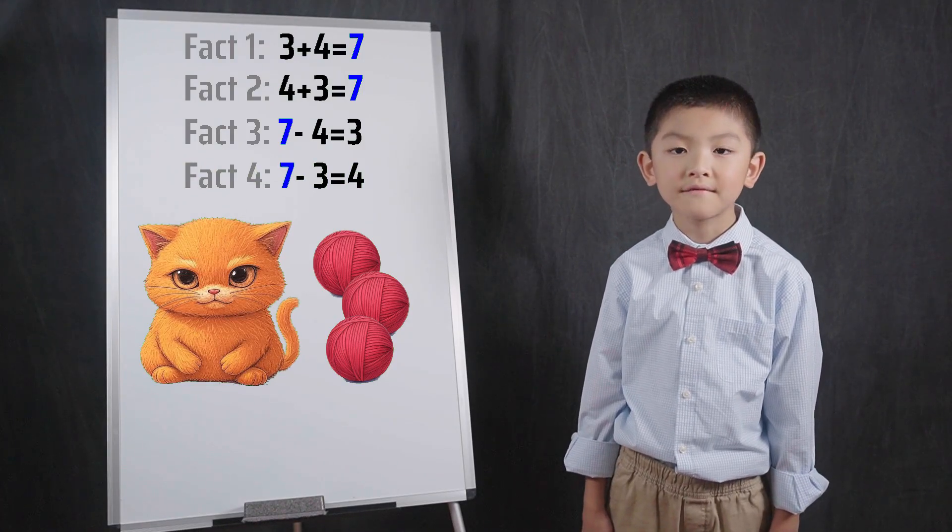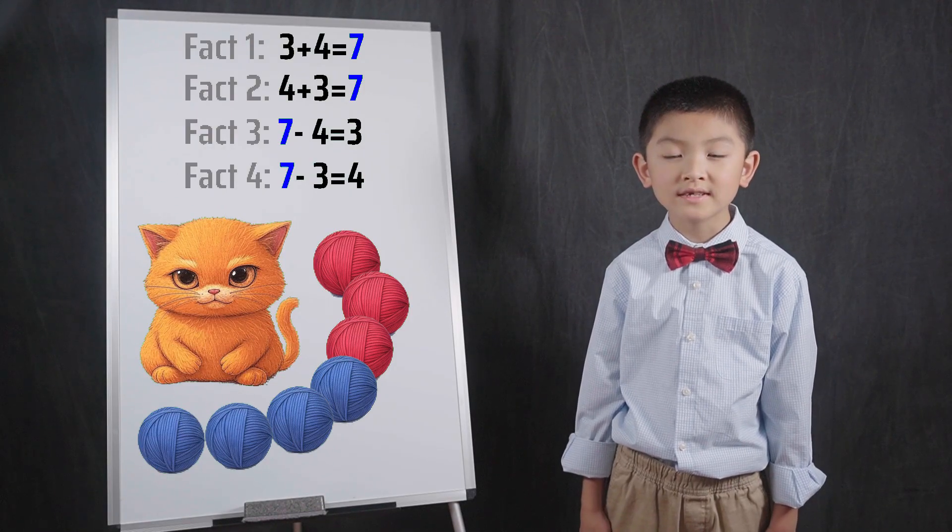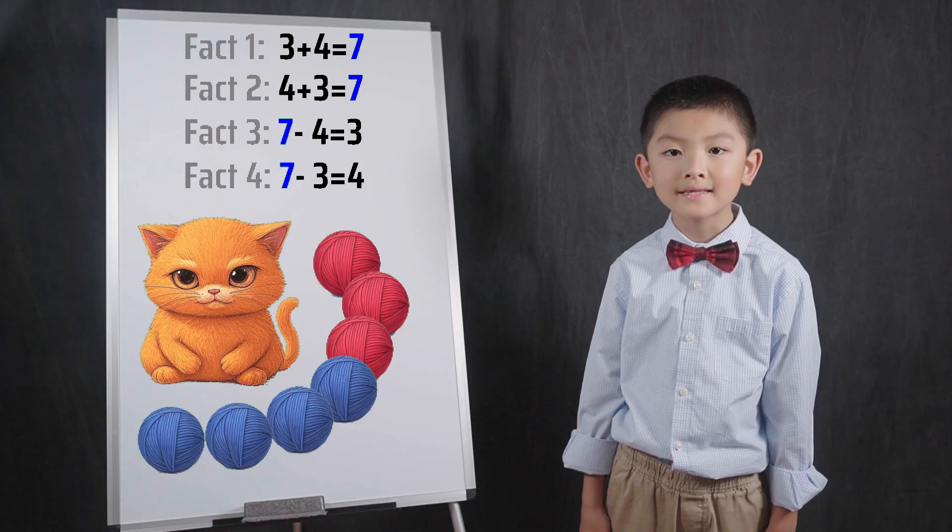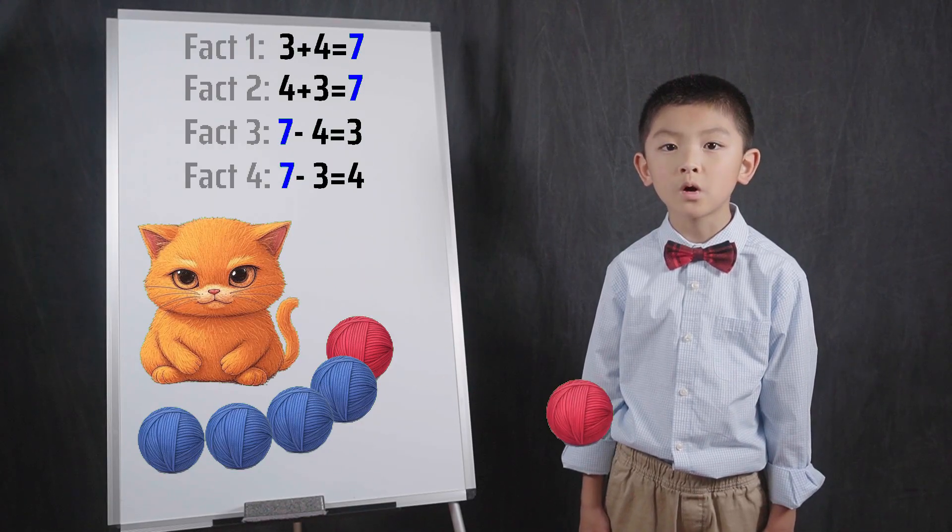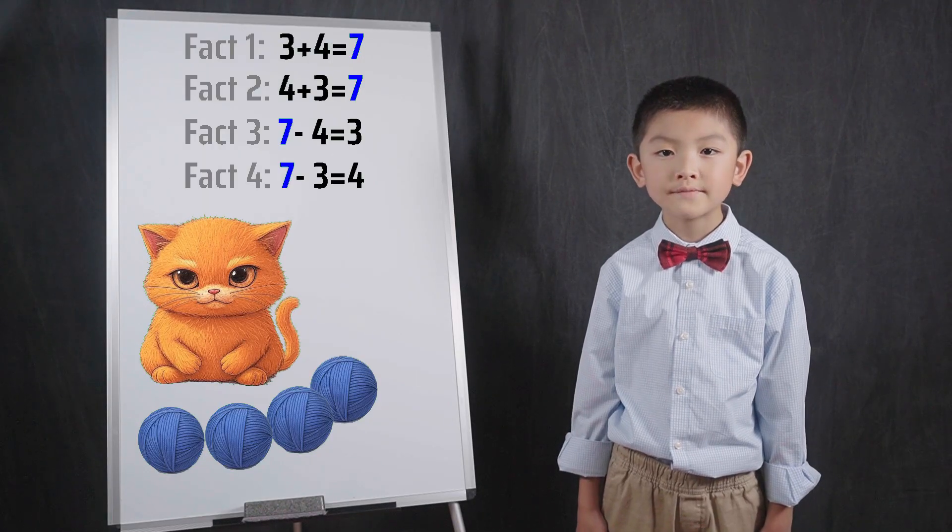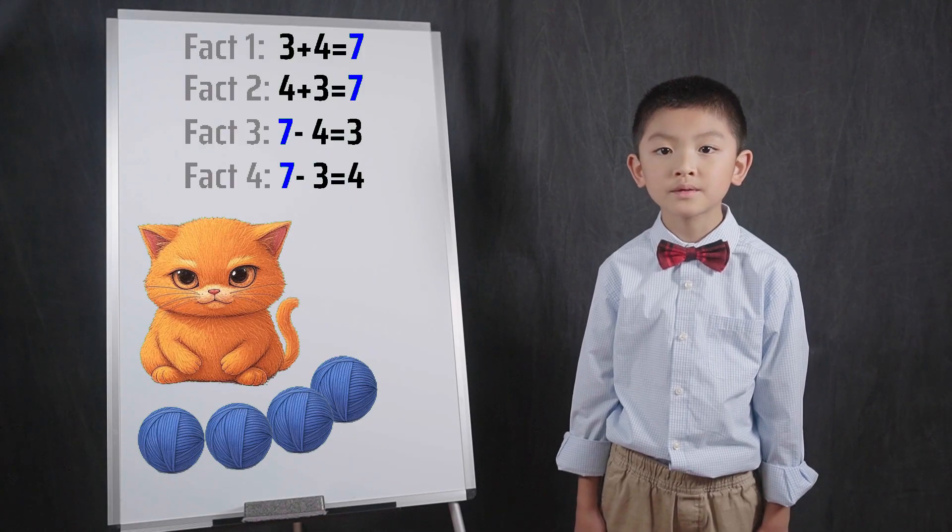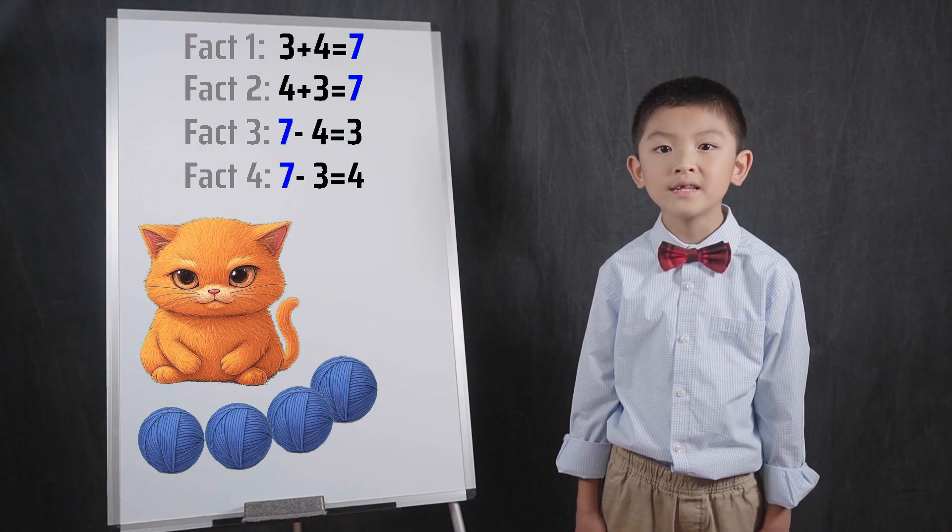In fact 4, we subtract 3 instead of 4. Going back to our balls example, imagine our cat had 7 balls and lost 3 balls. Logically, he would now have 4 balls. If you subtract 4 from 7, the difference is 3. If you subtract 3 from 7, the difference is 4.